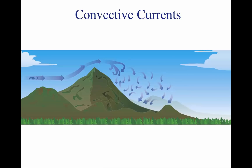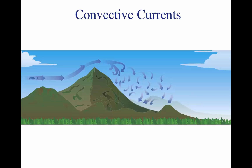This same condition is even more noticeable when flying in mountainous regions. While the wind flows smoothly up the windward side of the mountain and the upward currents help to carry an aircraft over the peak, the wind on the leeward side does not act in a similar manner. As the air flows down the leeward side, it follows the contour of the terrain and is increasingly turbulent. This tends to push an aircraft into the side of a mountain. The stronger the wind, the greater the downward pressure and turbulence become.